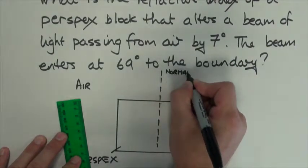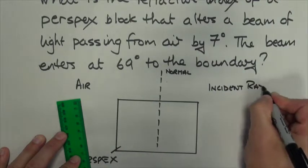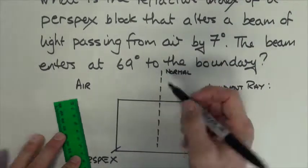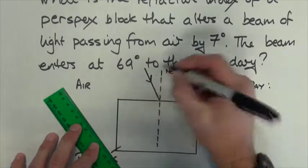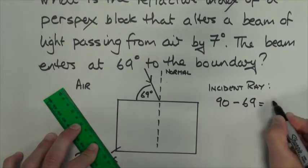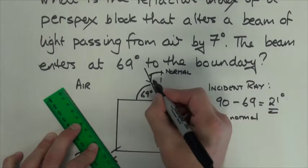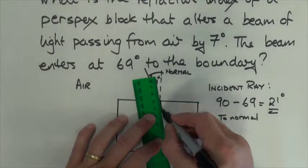Okay, now I know that it's at 69 degrees to the boundary as the incident ray. Now remember, the incident ray should always be to the normal, so what I have to do is take this away from 90 to give me my incident ray to the normal, which is 21 degrees. Great.